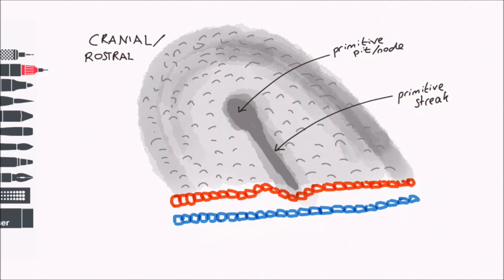This is called the primitive streak and is critical. The primitive streak deepens to form a groove, called the primitive groove, and a pit forms at the cranial end of the primitive streak. This is called the primitive pit. The primitive pit is surrounded by a raised ring of cells, and this raised ring of cells with the primitive pit is called the primitive node.